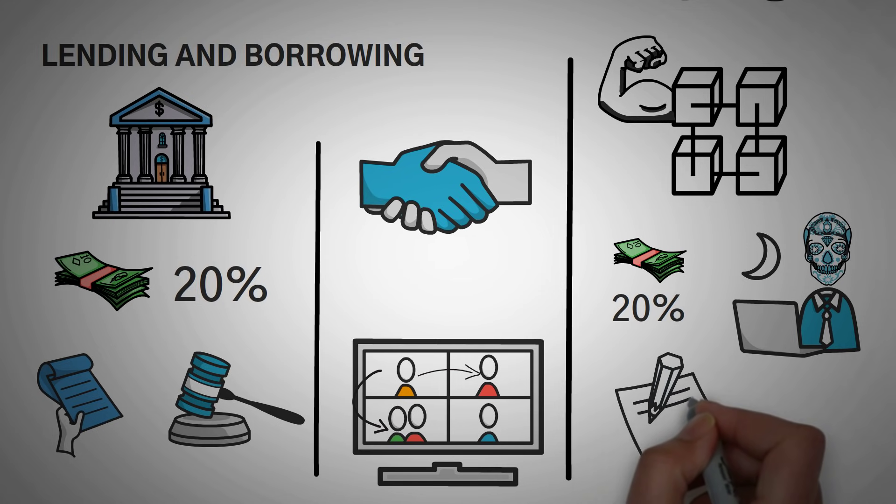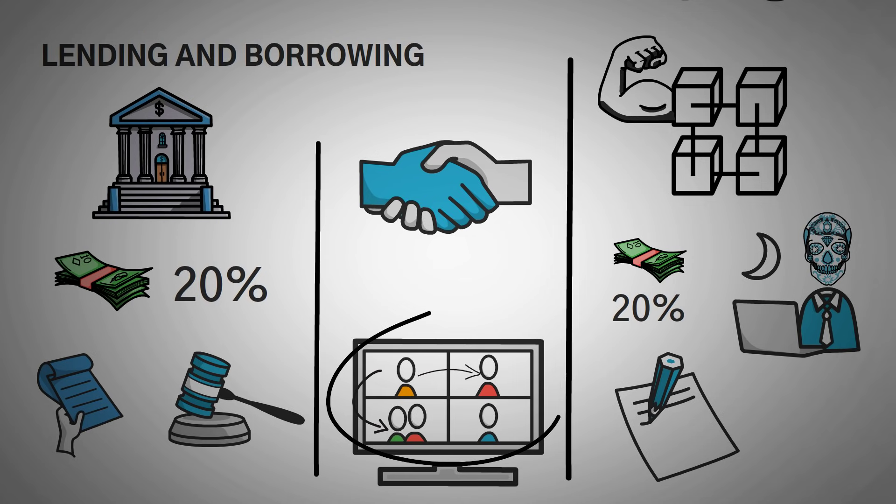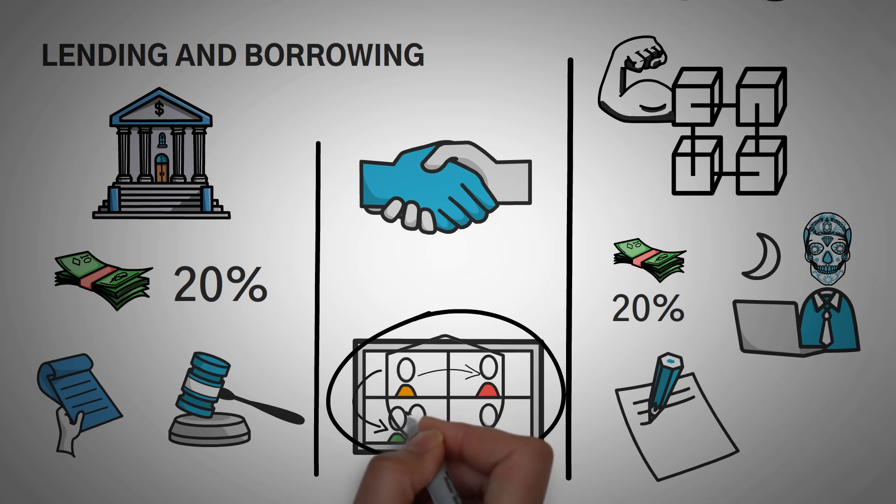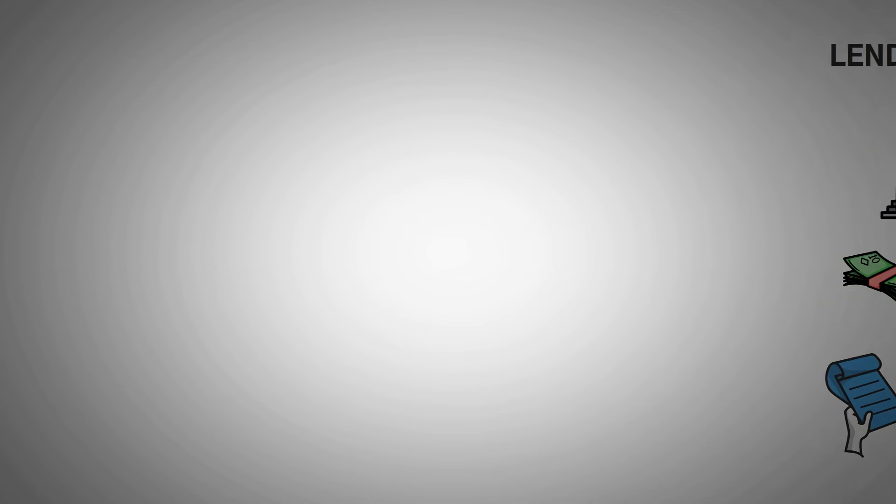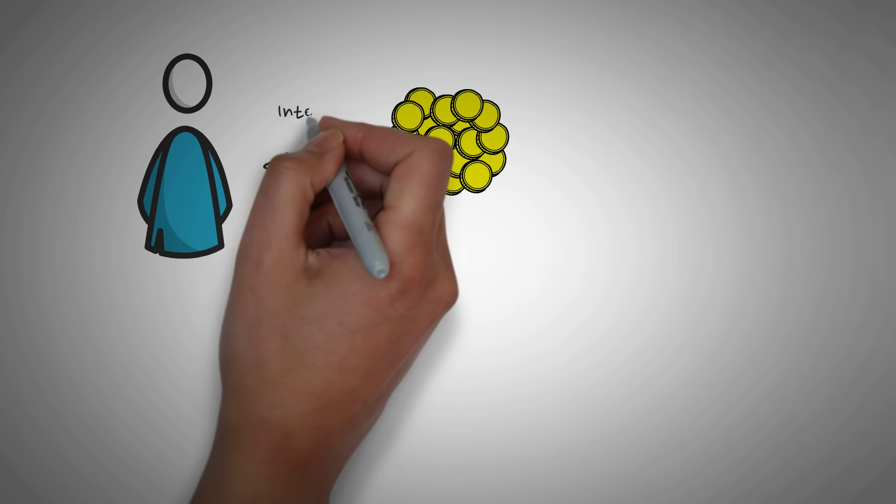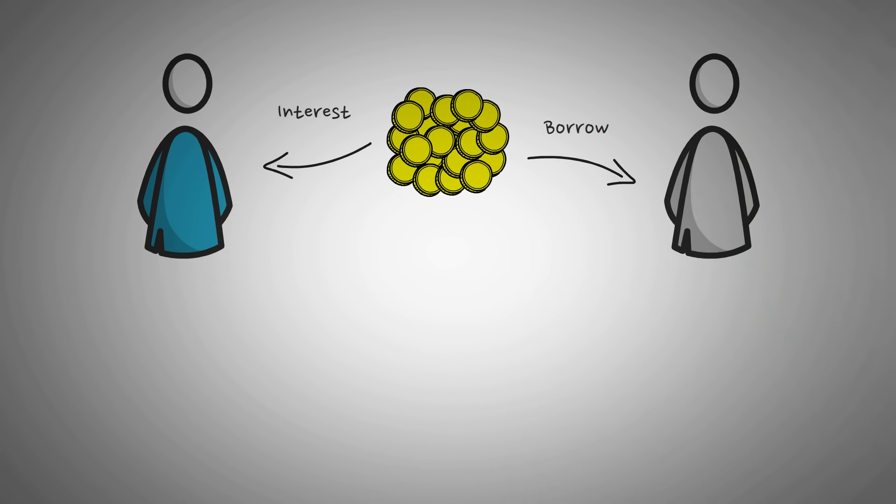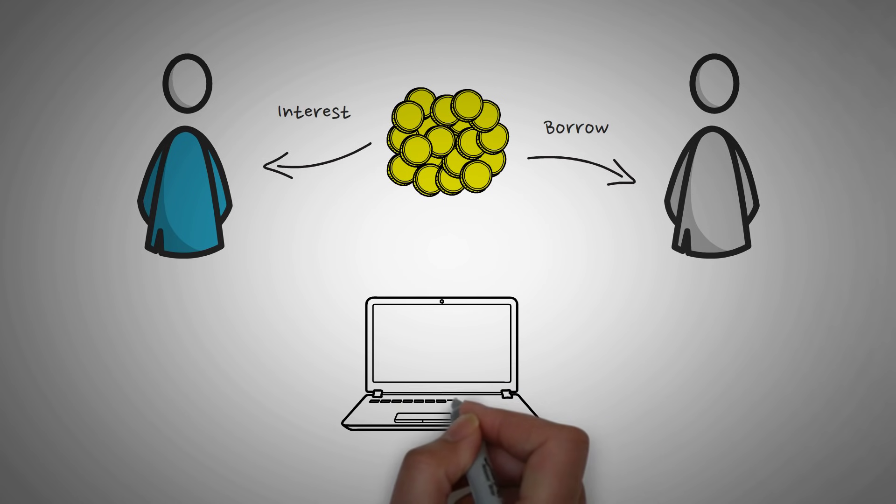So we have to find a way to solve this. In fact, with the use of smart contracts, we can actually allow others to use our funds while still keeping custody of them. So let me go through a little example. Person A wants to earn interest on his coins, while person B wants to borrow some coins.